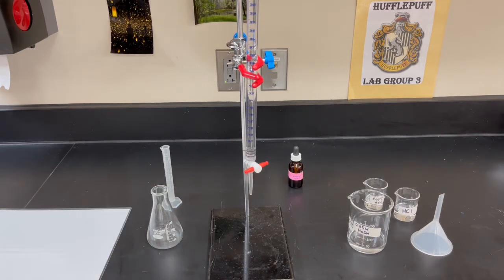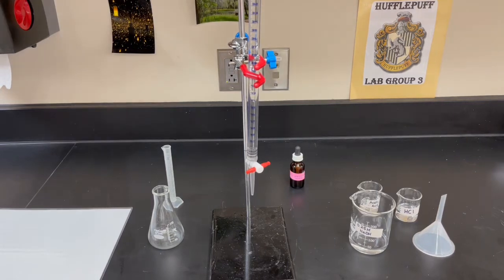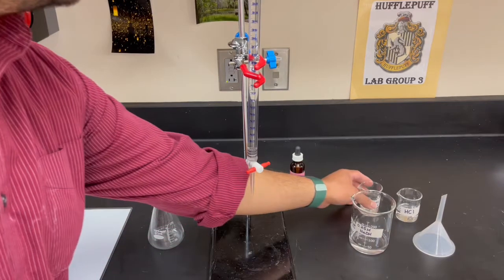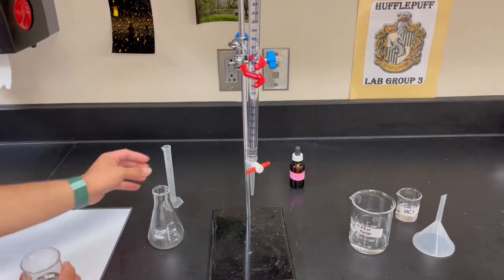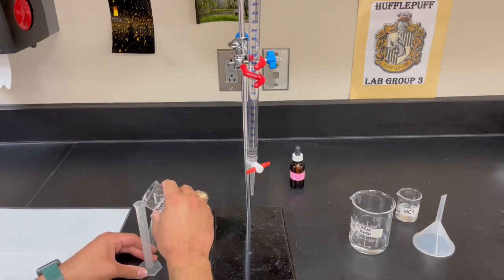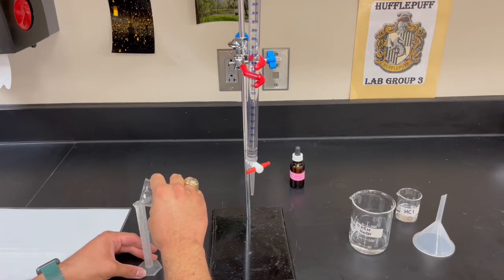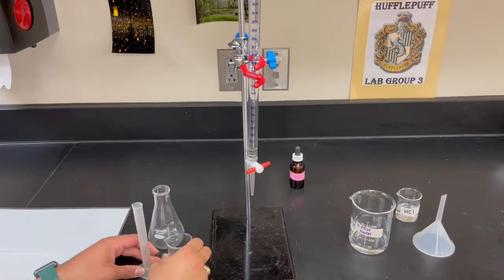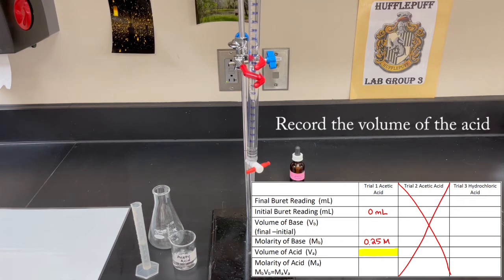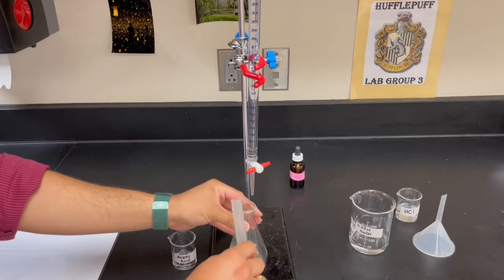So the next step we're going to do is measure out five milliliters of acetic acid. We have our acid here. We're going to measure out five milliliters. It's exactly five. And so I'm going to pour the contents into my Erlenmeyer flask.